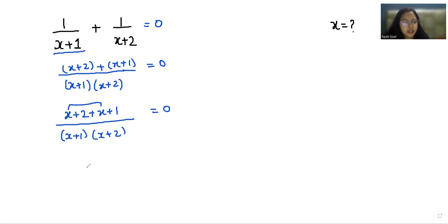So x plus x is 2x and 2 plus 1 is 3 by x plus 1 times x plus 2 is equals to 0.